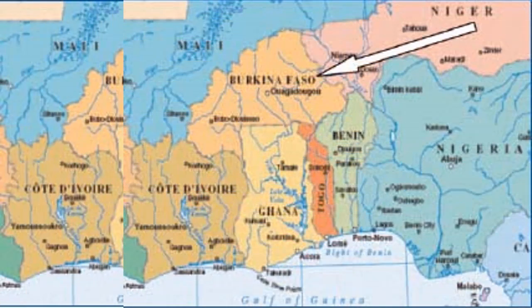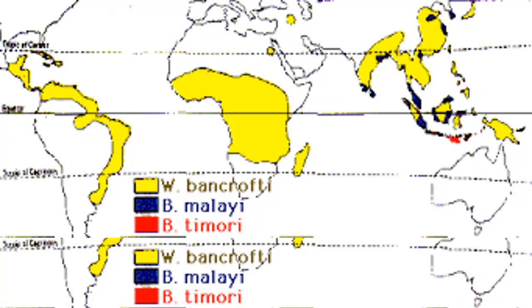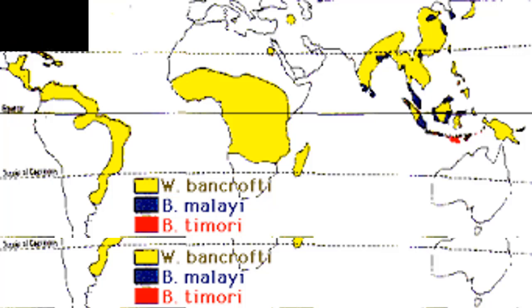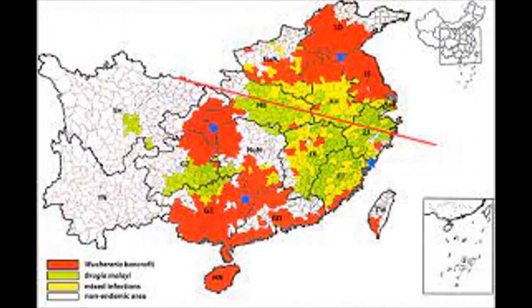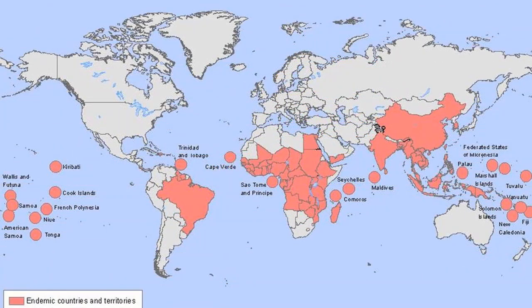Epidemiology. Wuchereria bancrofti occurs in sub-Saharan Africa, Southeast Asia, the Indian subcontinent, many of the Pacific Islands, and focal areas of Latin America and the Caribbean, including Haiti. Brugia malayi occurs mainly in China, India, Malaysia, the Philippines, Indonesia, and various Pacific Islands. Brugia timori occurs on the Timor Island of Indonesia. Overall, approximately two-thirds of individuals infected with lymphatic filariasis are in Asia.